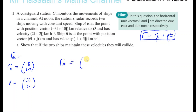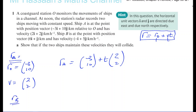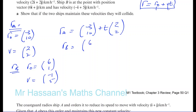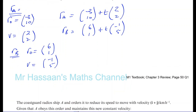So the position vector of A at any given time is (−3, 10) + t·(2, 2). For Ship B, r₀ = (6, 1) and velocity = (−1, 5), so r_B = (6, 1) + t·(−1, 5).